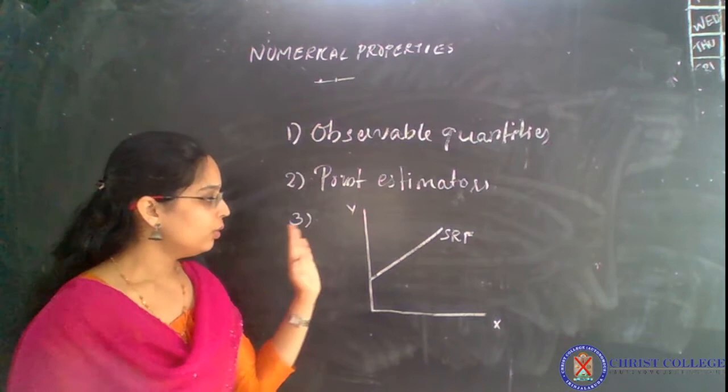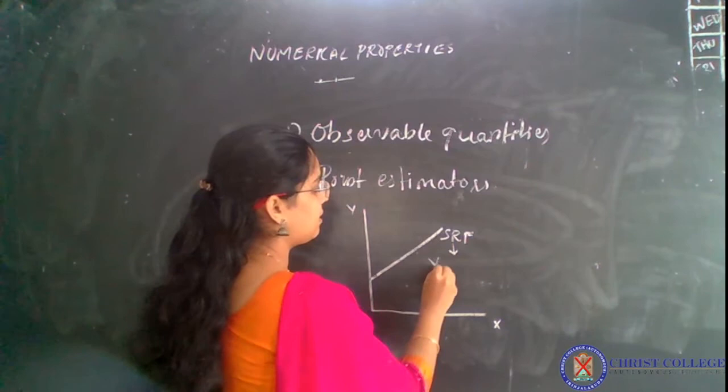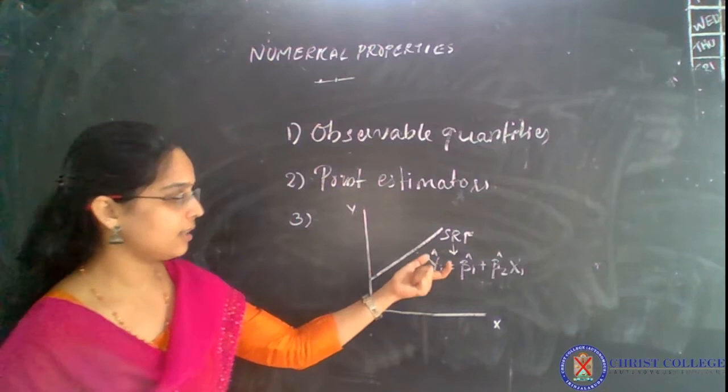We have to look at some special properties of the sample regression function line. The sample regression function is: ŷᵢ = β̂₁ + β̂₂xᵢ. Our next task is to identify some particular properties of this regression line.